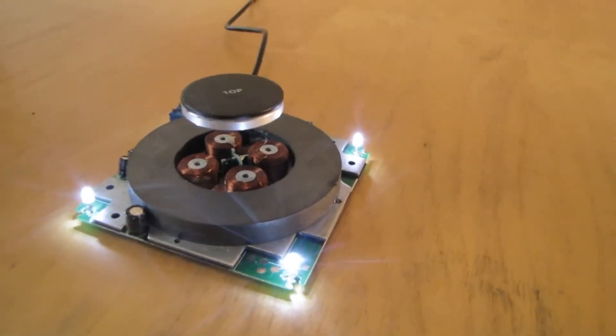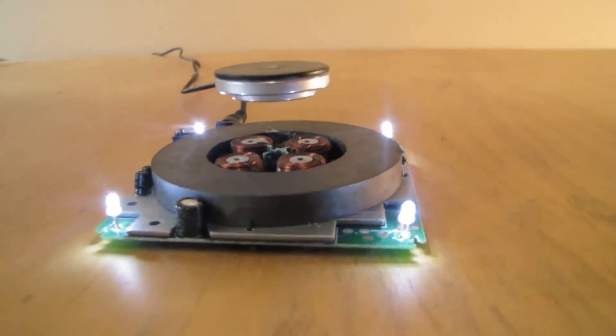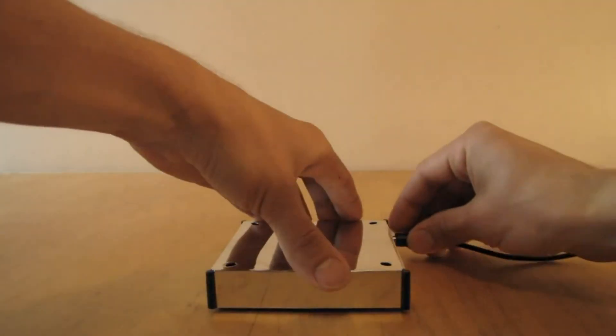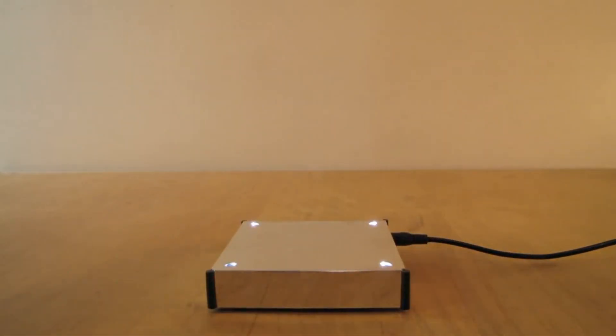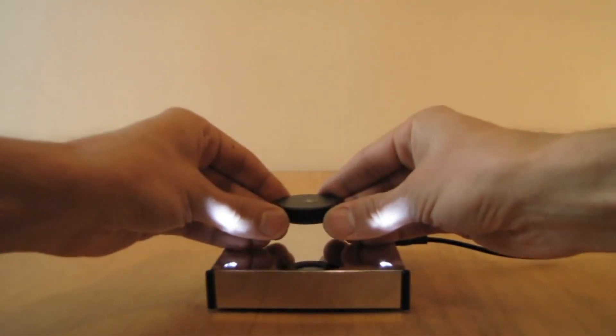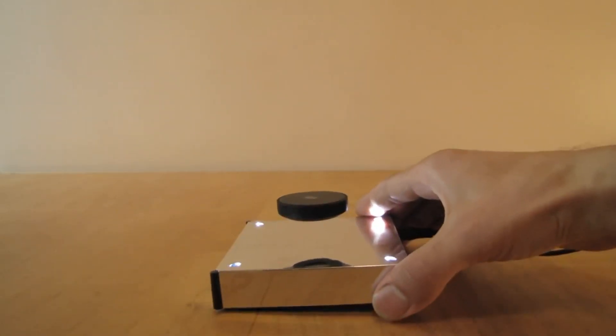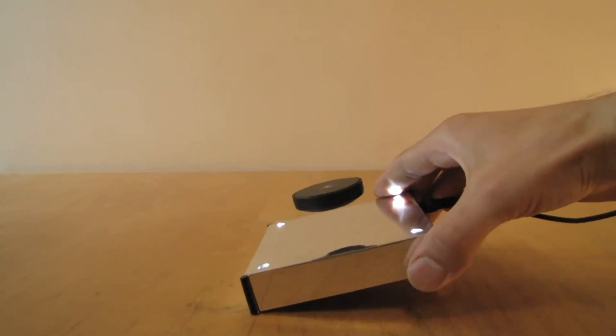The levitation is achieved by cooperative action between large attracting ferrite disc magnet and repelling electromagnets that are controlled by a feedback loop which continuously adjusts the electromagnets in relation to the levitating magnet's position.